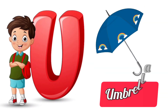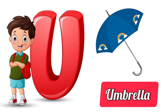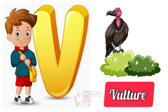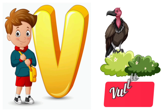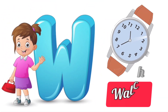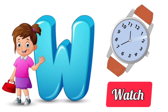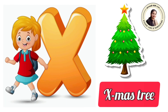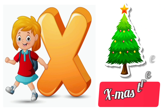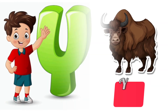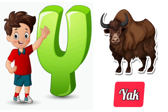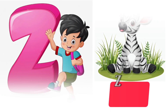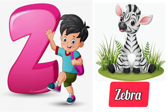U for Umbrella. V for Vulture. W for Watt. X for Xmas tree. Y for Yag. Z for Zebra.